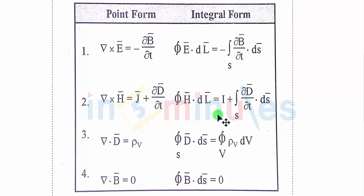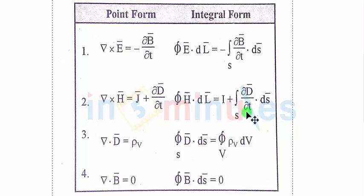Maxwell's second equation in integral form states that the closed line integration of H-bar dot dl-bar is equal to I plus the surface integration of the partial derivative of D-bar with respect to time over the surface area.